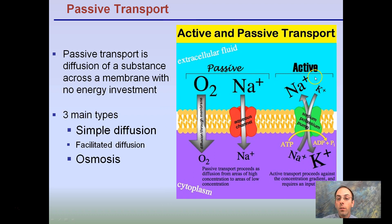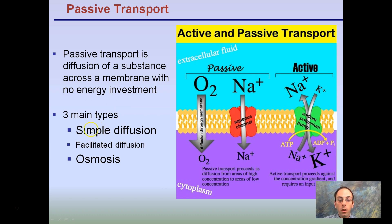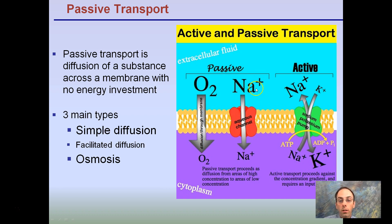Looking at a nice example of passive and active: extracellular fluid brings things into the cell. Passive transport is the diffusion of a substance across the membrane with no energy investment — no energy investment is the key point. It does not mean no proteins or channels are needed. There are three main types: simple diffusion, facilitated diffusion (which does require proteins), and osmosis (the movement of water). For example, oxygen simply diffuses right through the membrane from higher to lower concentration. Sodium ions require a channel, but it's still passive — this is facilitated diffusion, where the substance diffuses across using a protein that requires no energy.